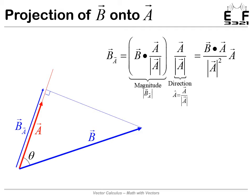Similarly, we can project B onto A using the same form of equation. Since we want the component of B in the direction of A, only the direction of A should matter. So we use the unit vector A divided by its magnitude. The dot product with B gives us the scalar magnitude of the projection, and we multiply by that unit vector again to get the direction. The final equation for the projection of B along A is the same as the previous equation with A and B swapped.